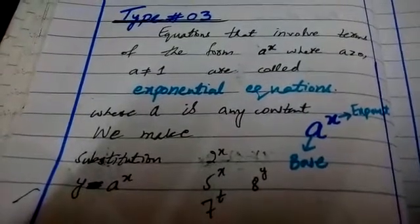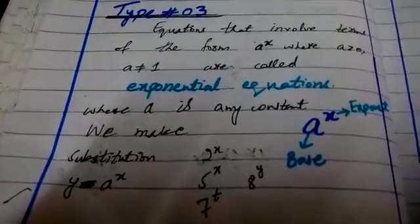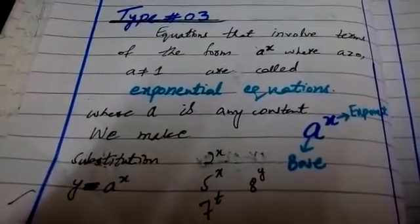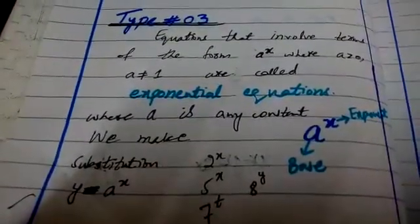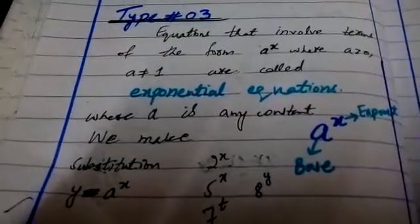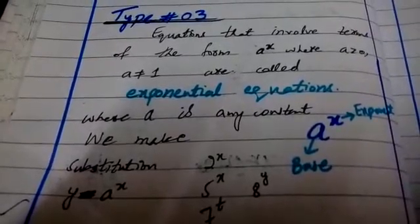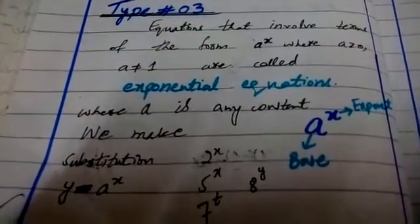Today our topic is solution of equation reducible to quadratic form. We have discussed two types. Today we have to do type number 3, which is our exponential equation. Equations that involve terms of the form a power x where a greater than 0 and a not equal to 1 are called exponential equations.